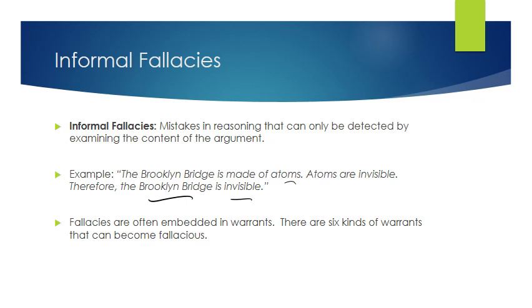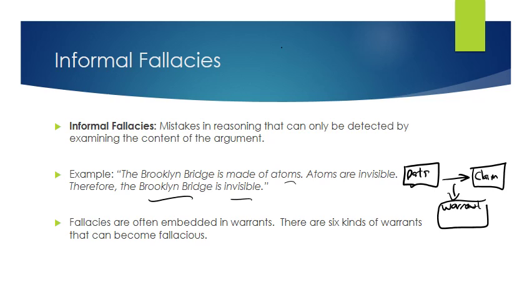Fallacies are often embedded in warrants. Going back to Toulmin: you have data, then you have a claim, and the fallacy is often in the warrant. In this lecture I'm going to show you six kinds of warrants that arguments generally have that are not fallacious, and then show how each kind of warrant can potentially become fallacious.